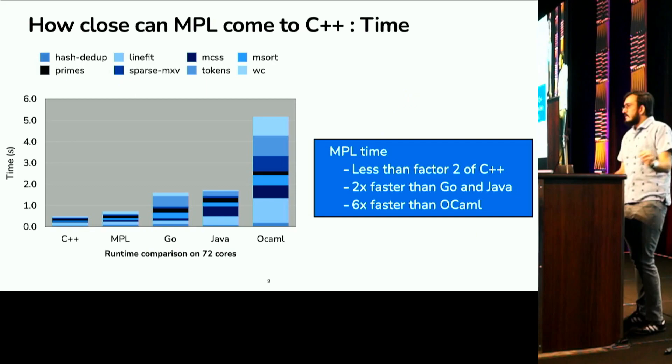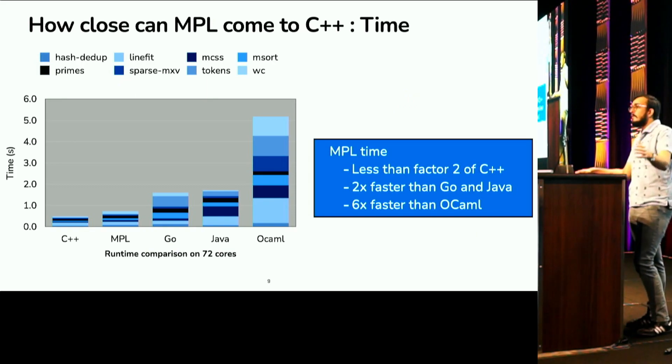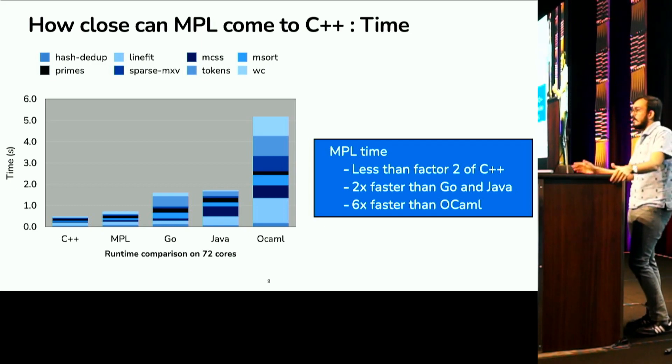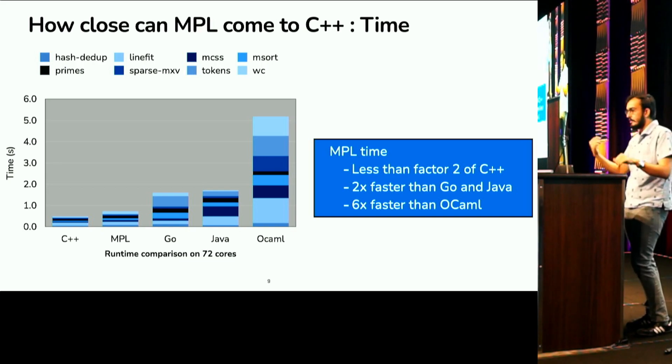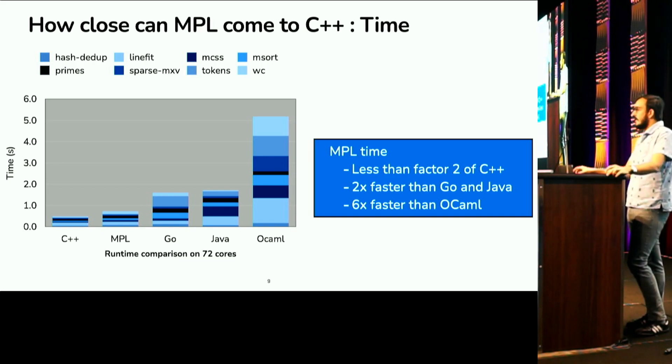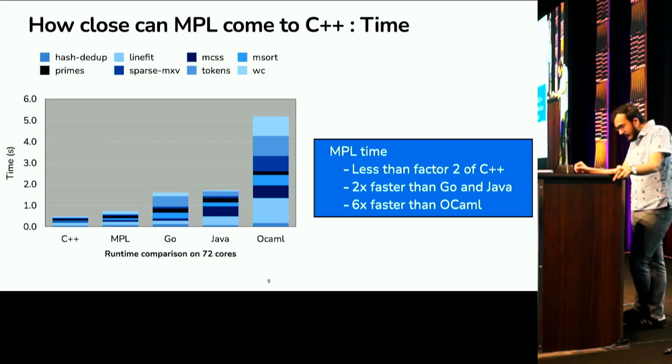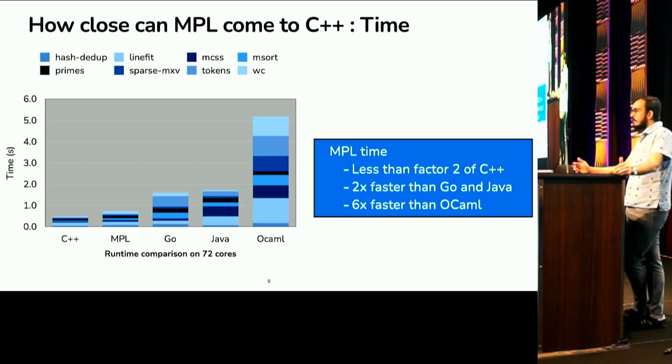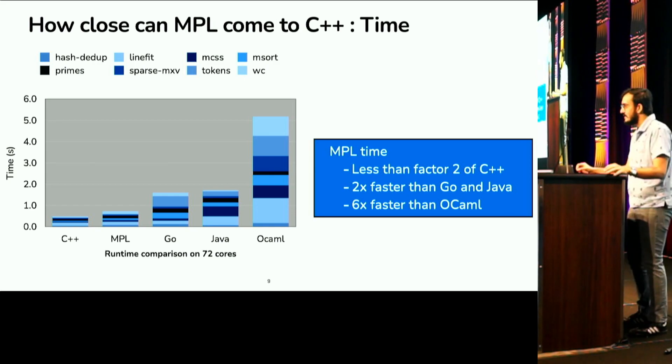So, we have implemented all of this in the Maple compiler for parallel ML. For people who are familiar with Maple, Maple only used to support disentangled programs, which is programs which only contain up or down pointers. But now with this paper, we have modified Maple to accept all programs with arbitrary mutation. And we really wanted to answer this question of how close a functional garbage collected language like Maple can come close to a manually memory managed language like C++.